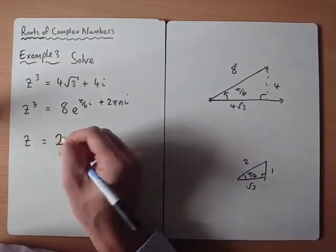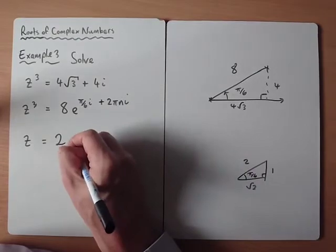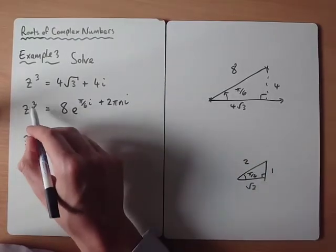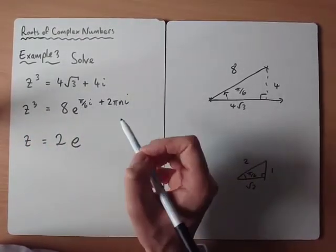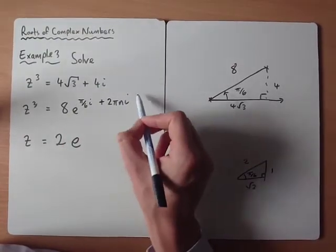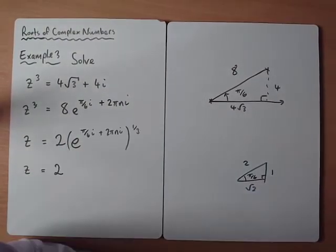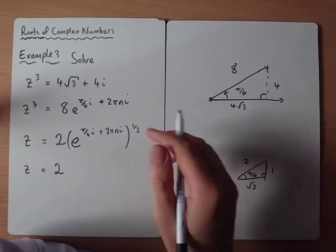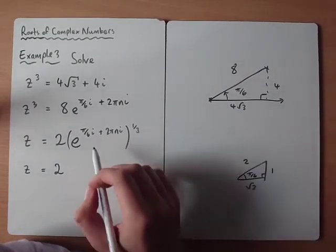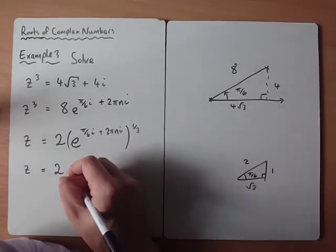So if we take the cube root of this, cube root of 8 is 2. We want to take the cube root of the power, so we're raising the power, we're multiplying the power by a third. It's like this whole thing is to the power of 1 third. So if you think about this being raised to the power of 1 third, multiplying the power by 1 third we'd get...